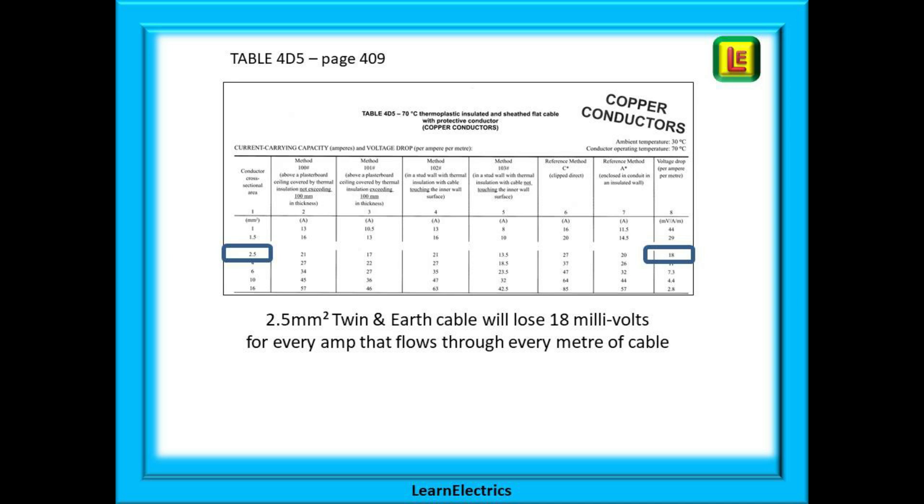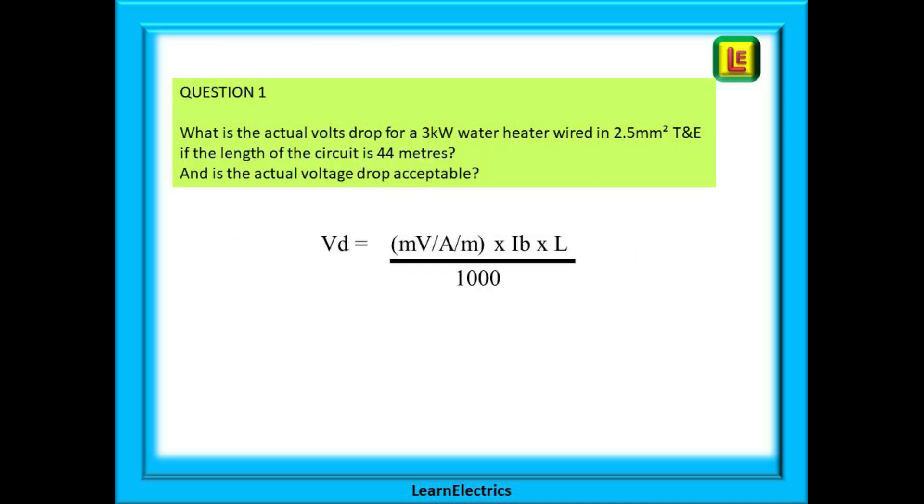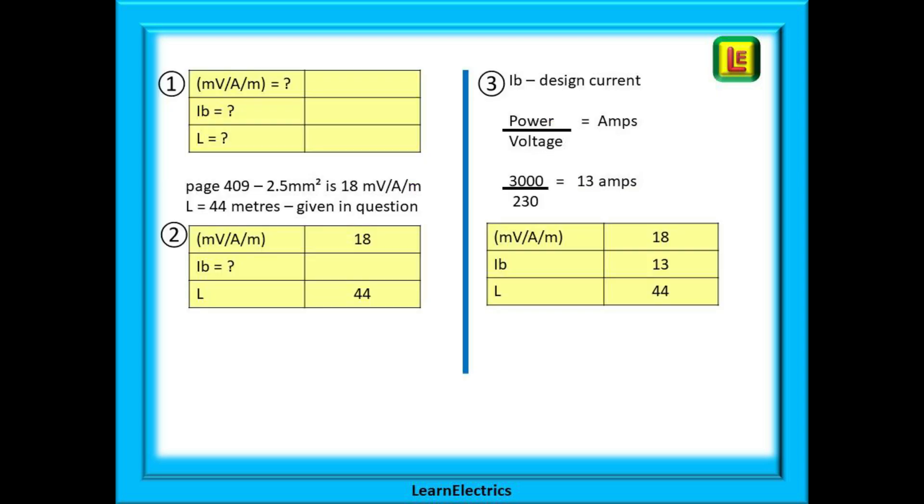Let us now work through a typical exam question and see the calculation in action. The question is: what is the actual volts drop for a three kilowatt water heater wired in 2.5 millimeter twin and earth cable if the length of the circuit is 44 meters, and is the actual voltage drop acceptable? What do we need to know? The box at number one shows us that we need the mV/A/m number, the design current or Ib (in other words, what the water heater is designed to consume when it is turned on), and we need to know the length. We can enter some data into the box at number two just from reading the question. In the third section we will calculate Ib from the power and voltage.